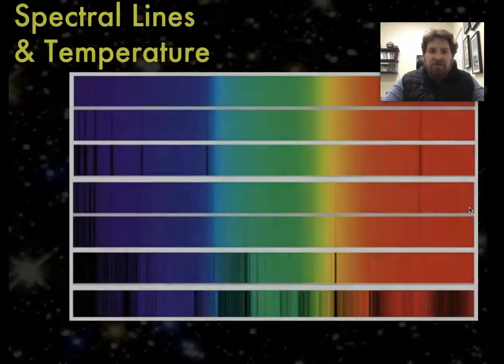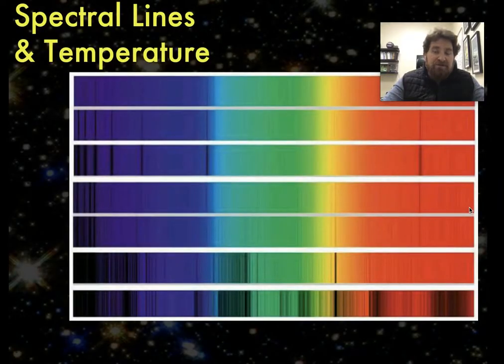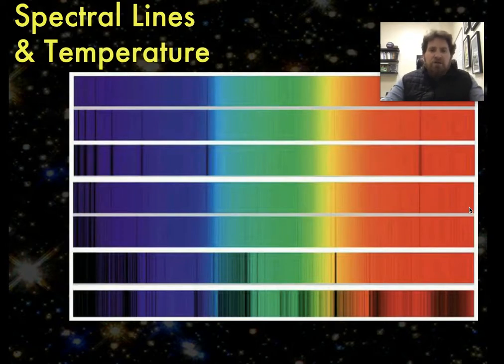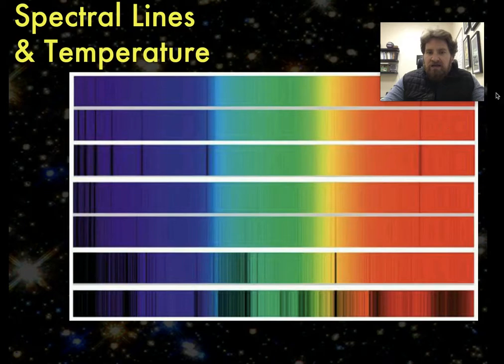Each of those gaps corresponds to specific elements or substances that are in that star. And so when we look at a star's spectrum, we can see these lines and we can actually identify what elements in the star are absorbing those wavelengths. For example, these red missing lines are characteristic of hydrogen. Only hydrogen absorbs this specific wavelength.